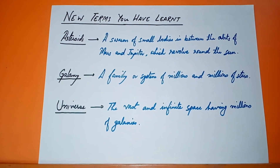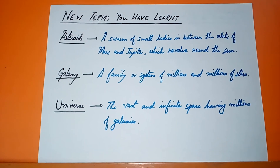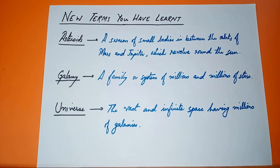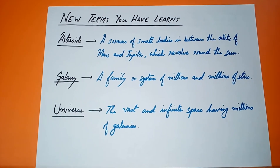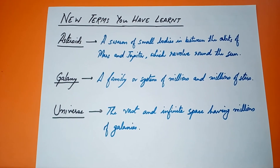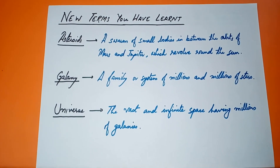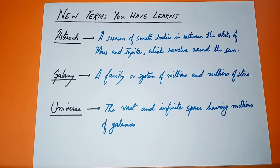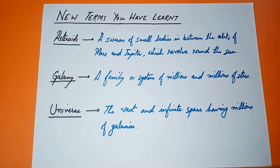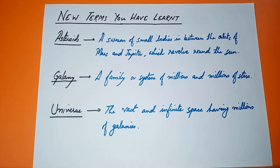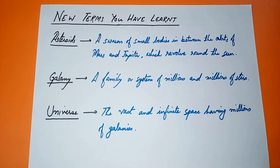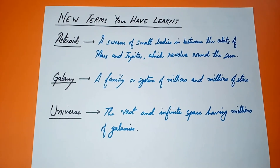Now the third part of the chapter — new terms you have learnt. Asteroids: a swarm of small bodies between the orbits of Mars and Jupiter which revolve around the sun. Galaxy: a family or system of millions and millions of stars. Universe: the vast and infinite space containing millions of galaxies.